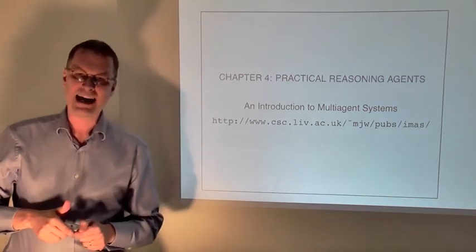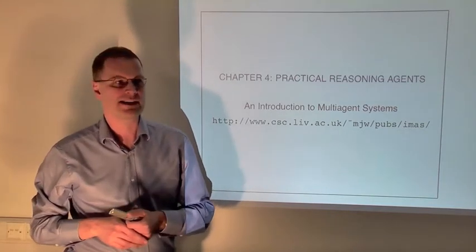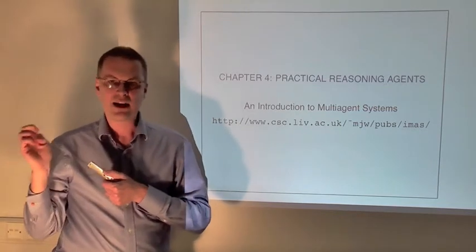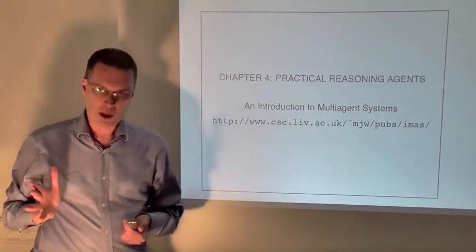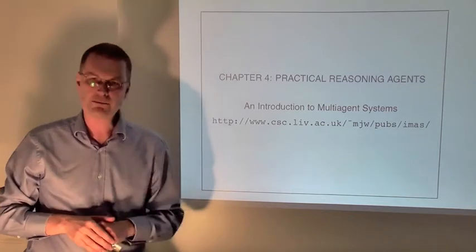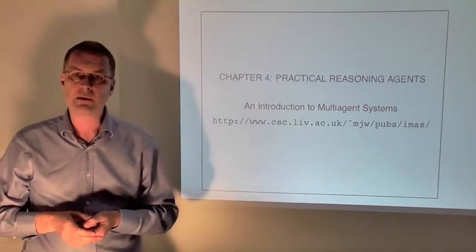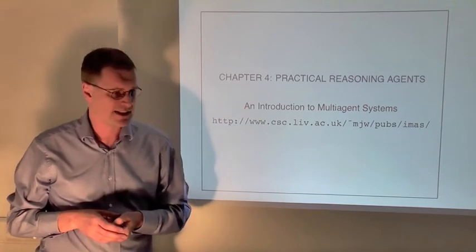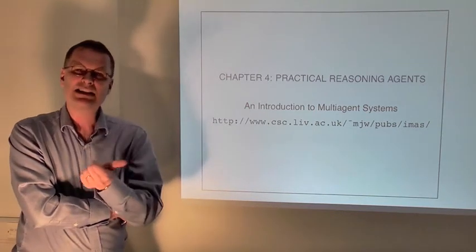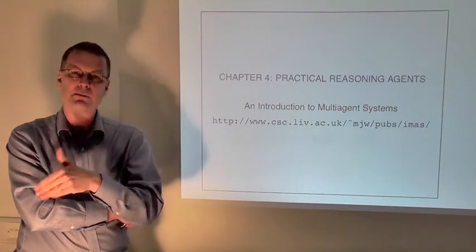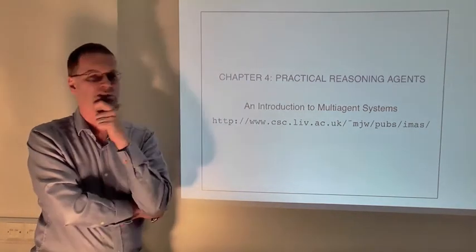In previous videos we've seen the idea of agents that make decisions about what action to perform by using logical reasoning. The basic idea is that they prove a theorem to the effect that a particular action is the optimal action to perform given their beliefs. There are many problems with this approach, but one conceptual problem is that it doesn't seem to resemble the way that we make decisions. By and large we seem to be pretty good decision makers. So in this video we're going to introduce practical reasoning agents.